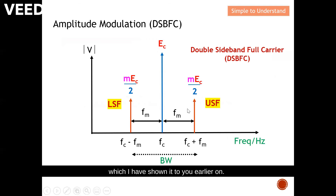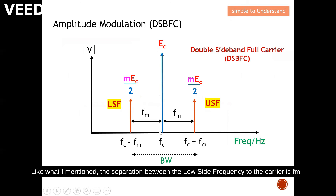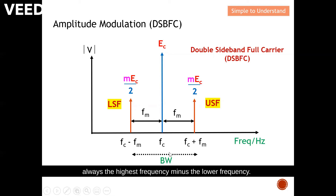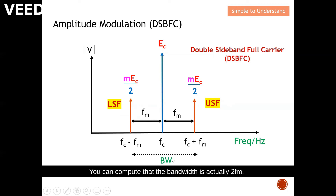Let's quickly discuss double sideband full carrier. This is the lower side frequency and this is the upper side frequency. The separation between the lower side frequency and the carrier is fm, and the separation between the upper side frequency and the carrier is also fm. To calculate the bandwidth, the formula is always the highest frequency minus the lowest frequency. From this diagram, the bandwidth is two times fm — that is, two times the frequency of the modulating signal.